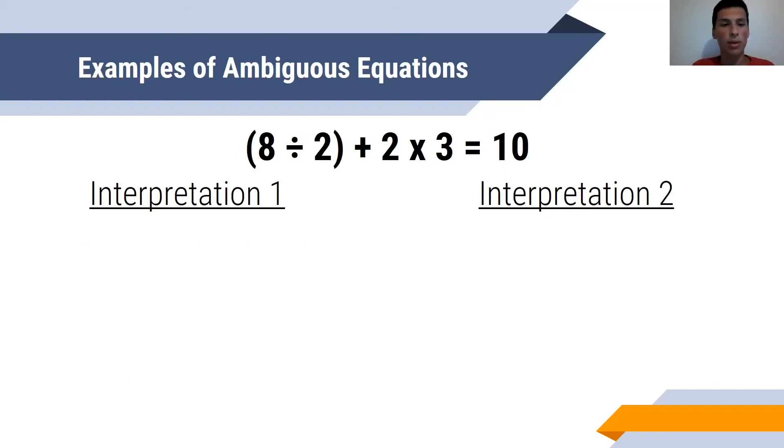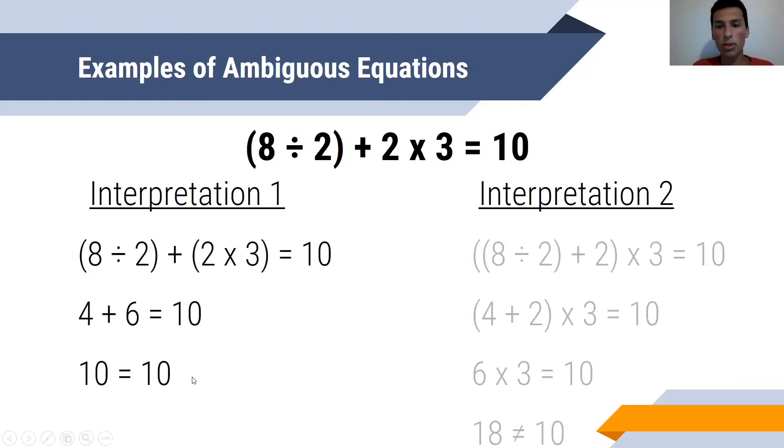There is still ambiguity. The first interpretation would be 8 divided by 2 in parentheses plus in parentheses 2 times 3 equals 10. This simplifies to 4 plus 6, and that's equal to 10, so this checks out. The other interpretation is in parentheses 8 divided by 2 plus 2 in parentheses times 3 equals 10. This would be 4 plus 2 in parentheses times 3, and then 4 plus 2 is 6. 6 times 3 is 18, not 10, so this doesn't match.